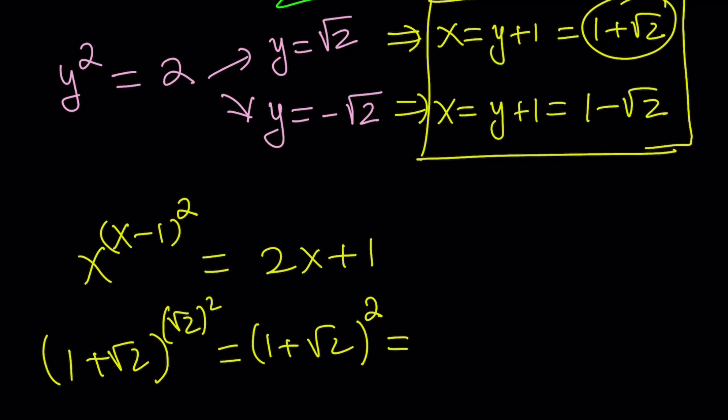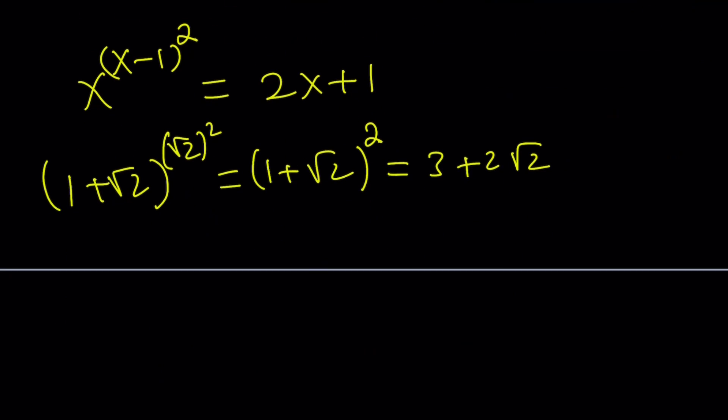And if you expand it, you get 3+2√2. Now if you do it with 2x+1, replace x with 1+√2, and don't forget to add the 1, you get 2+1 which is 3, plus 2√2, which is the same as this one. Awesome.